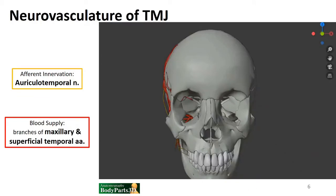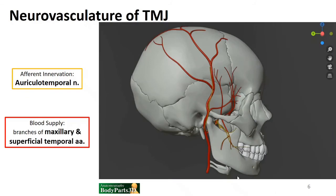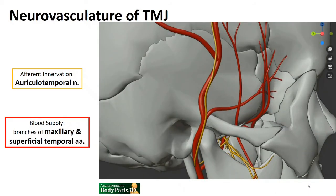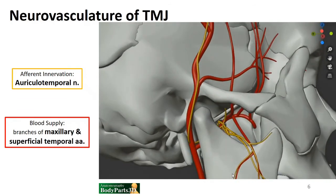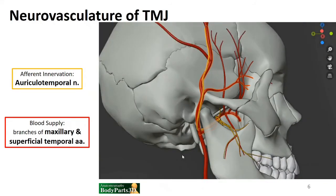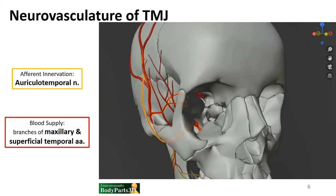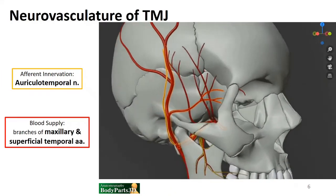When considering the neurovasculature of this joint, we can think of it as opportunistic — structures that pass around the area or supply nearby muscles will also supply the joint. The major sources are the auriculotemporal nerve, which carries afferent innervation from the area, and blood supply through the maxillary and the superficial temporal arteries. In this 3D view, you can see the vasculature and nerves to the area, and note how close in proximity the superficial temporal artery, maxillary artery, and auriculotemporal nerve are to the temporomandibular joint.